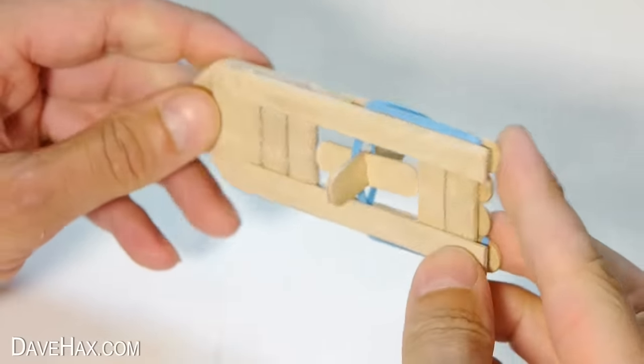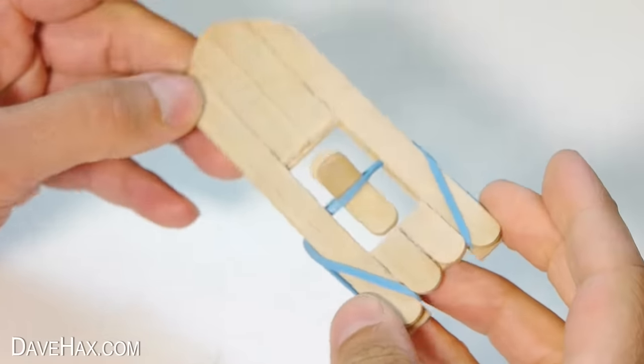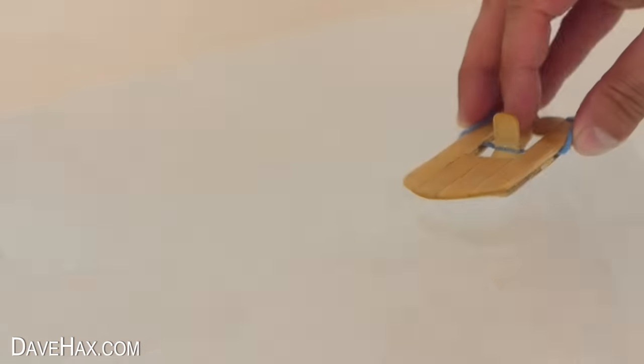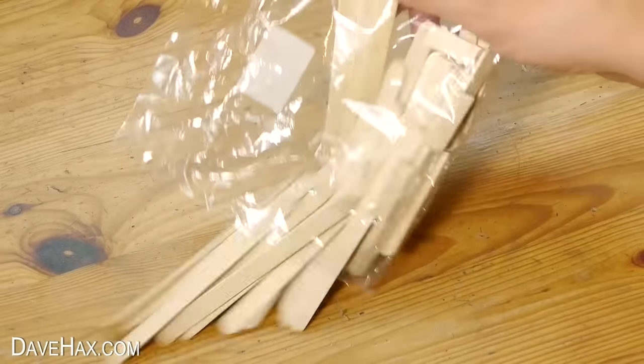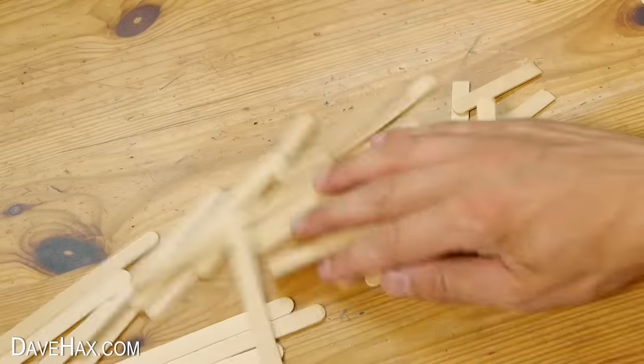Today I'm going to show you how to make this really cool wooden paddle boat. It uses an elastic band to power it, and I made the whole thing out of lollipop sticks or popsicle sticks as you may call them.